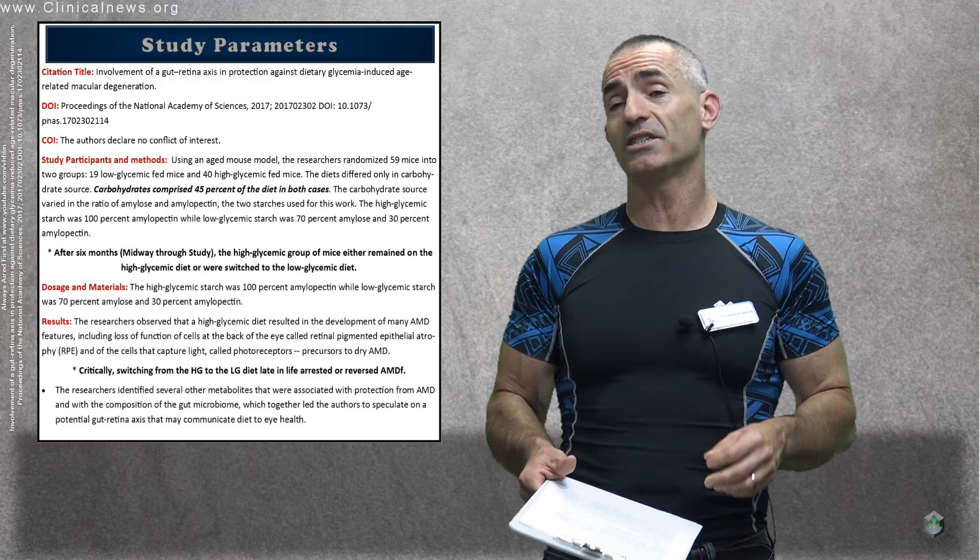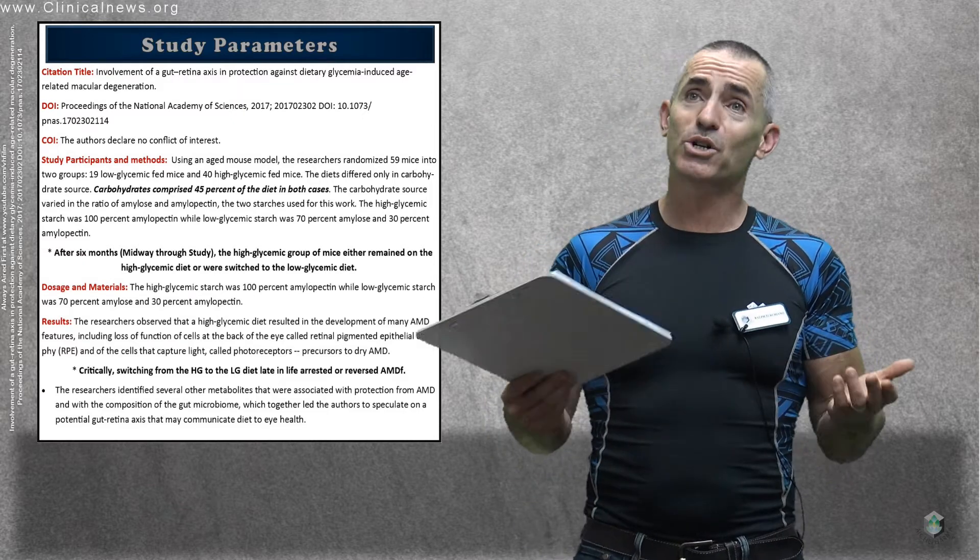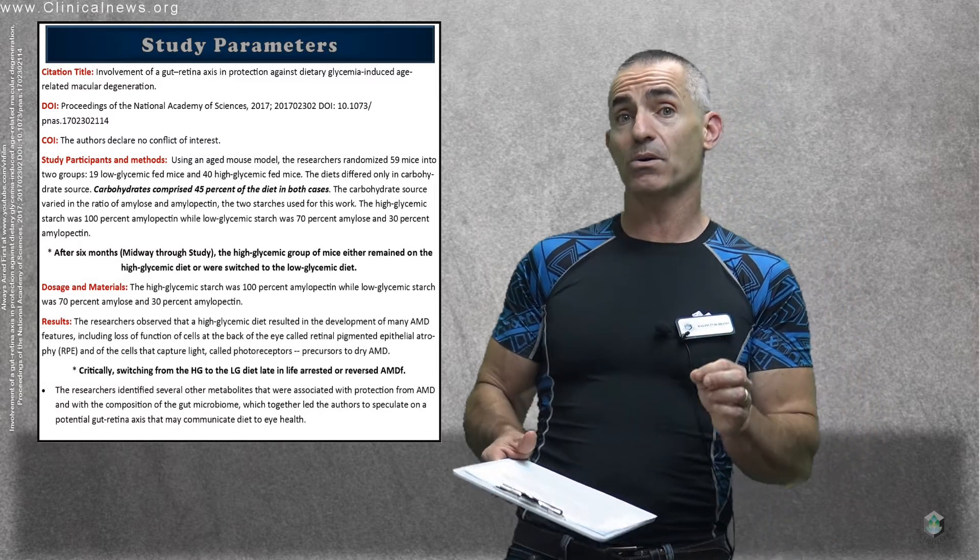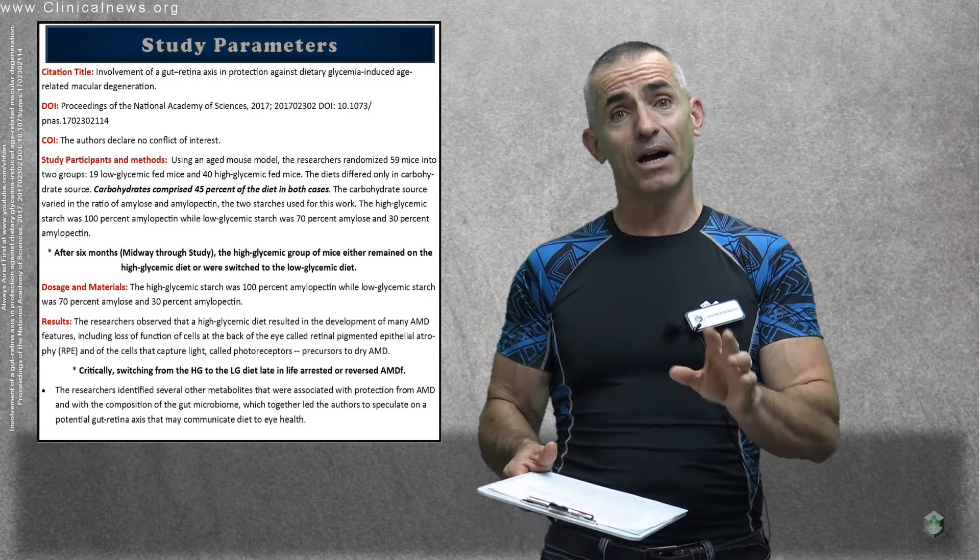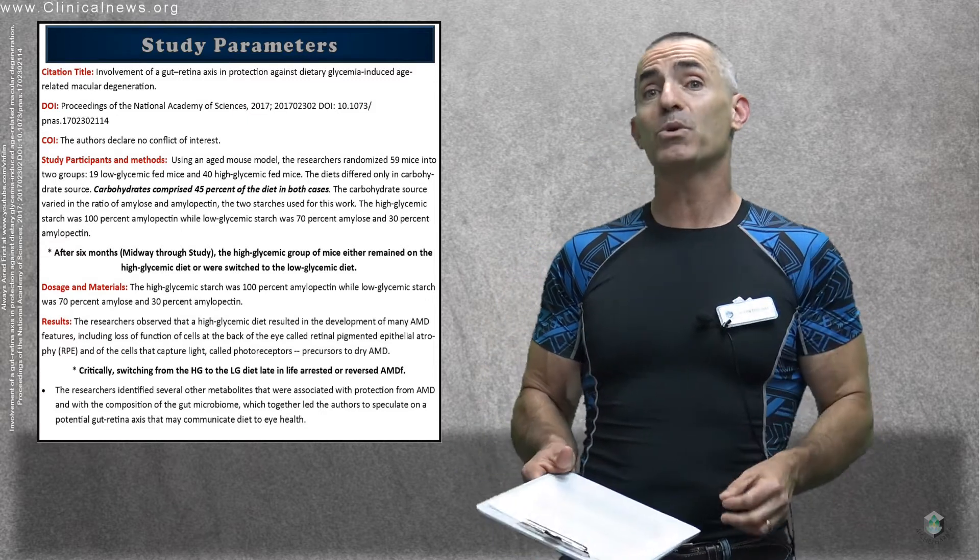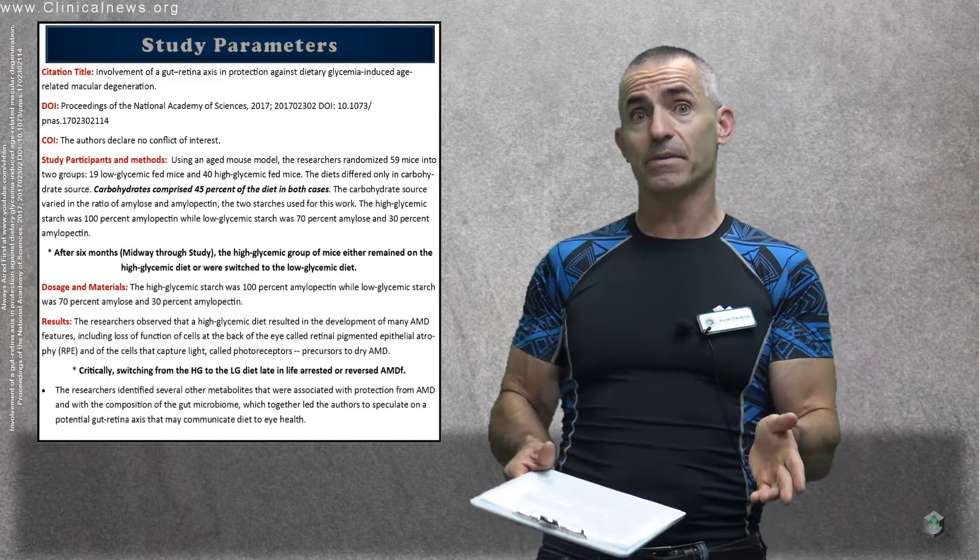To a low-glycemic diet, which may help develop a more favorable environment of good bacteria that happen to benefit the eyes. Henceforth, gut-retina axis. But for this point, we're just going to stick with the dietary part: high-glycemic, low-glycemic.